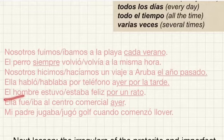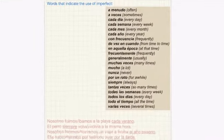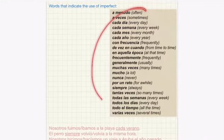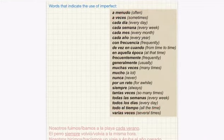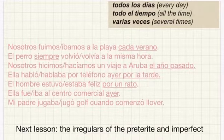Moving on, 'por un rato' was in the words indicating the imperfect tense. So it says 'for a while,' and you would actually use the imperfect tense here.